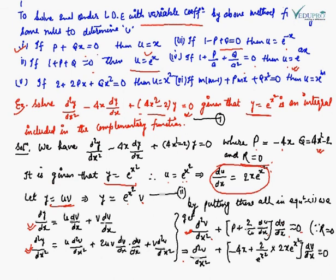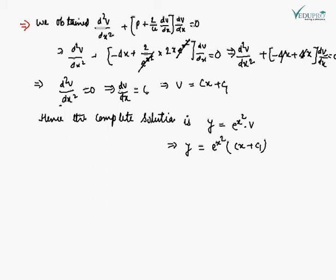Since R = 0, the equation becomes d²v/dx² + [-4x + (2/e^(x²))·2x·e^(x²)]·dv/dx = 0. The e^(x²) terms cancel, giving -4x + 4x = 0. So the entire coefficient of dv/dx becomes 0, and the equation reduces to d²v/dx² = 0.